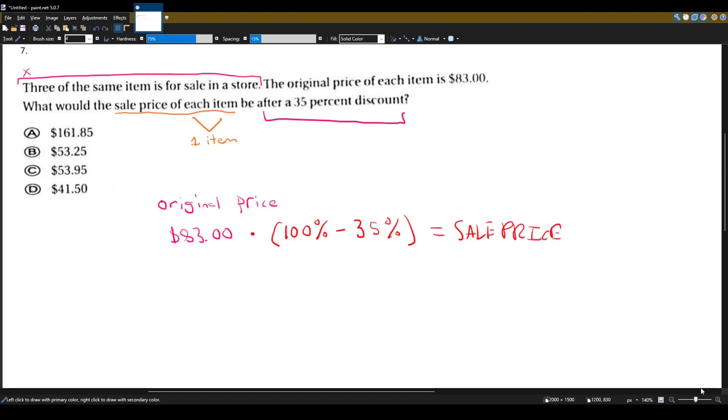So let's do some simplification here. We'll do $83, or just 83, times what's 100% minus 35%. That's going to be 65%. It's going to equal to the sale price.